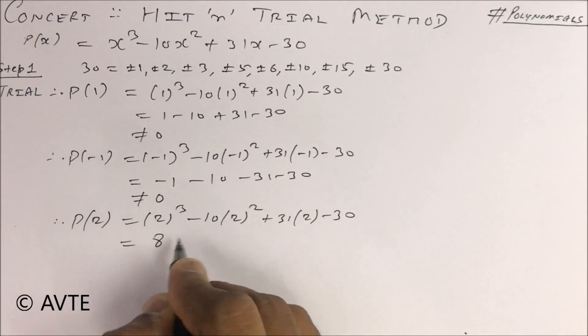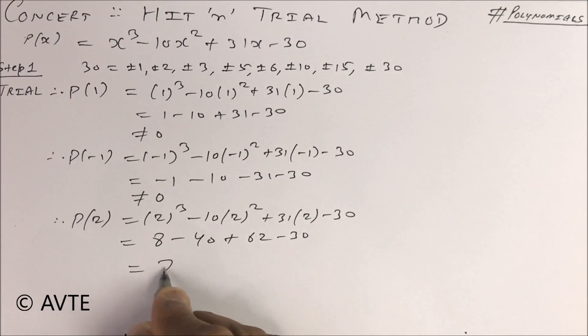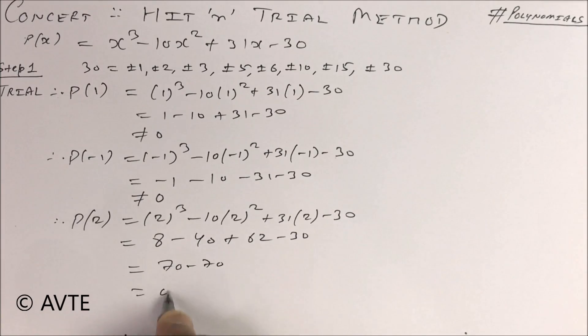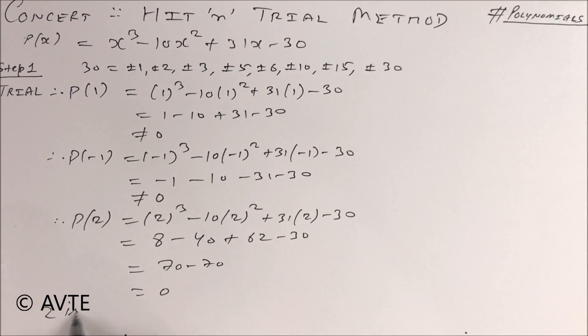Let's check. Wow, this is 70 - 70. The answer is 0.